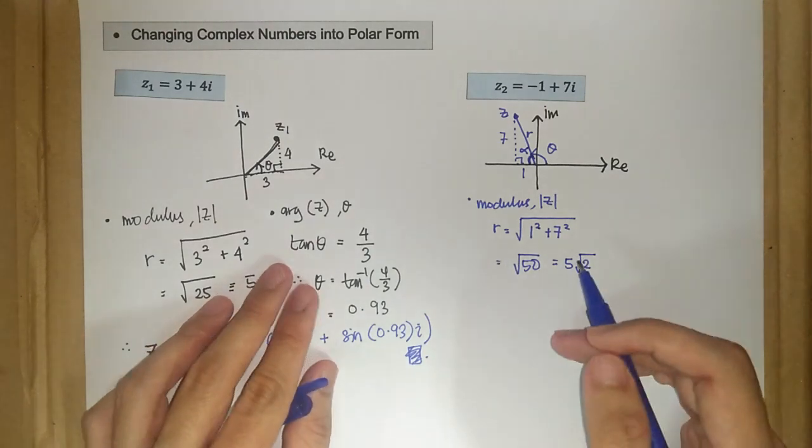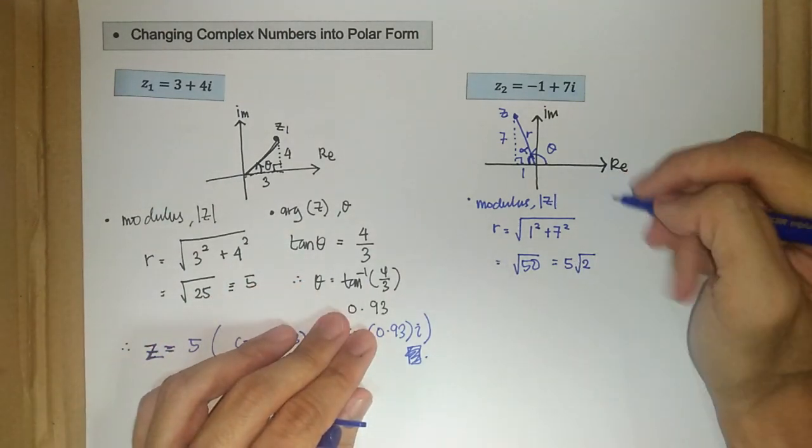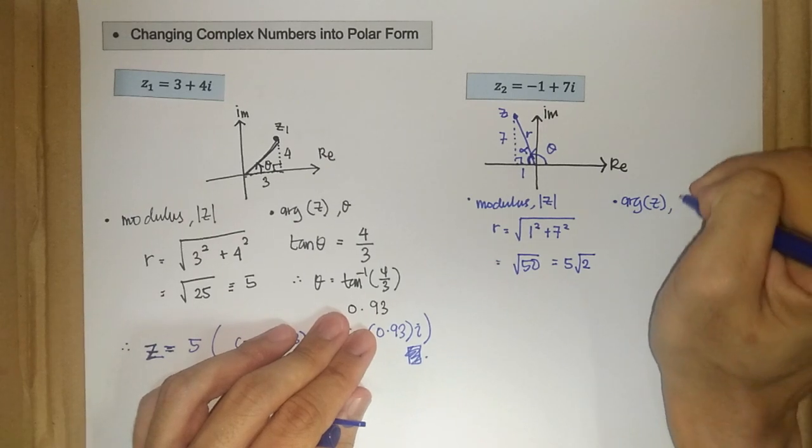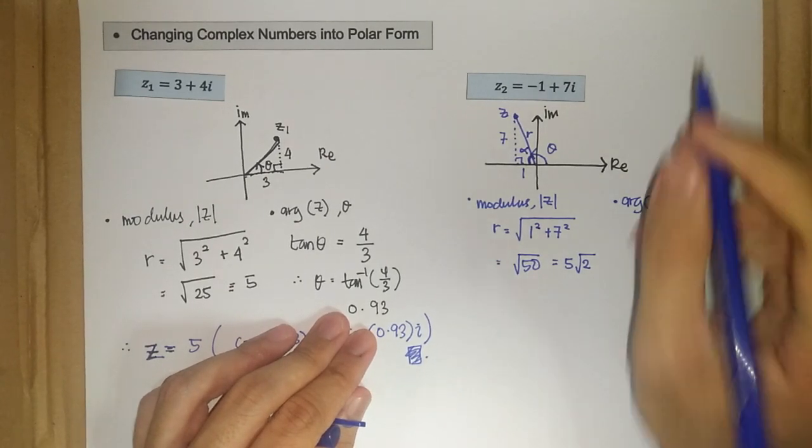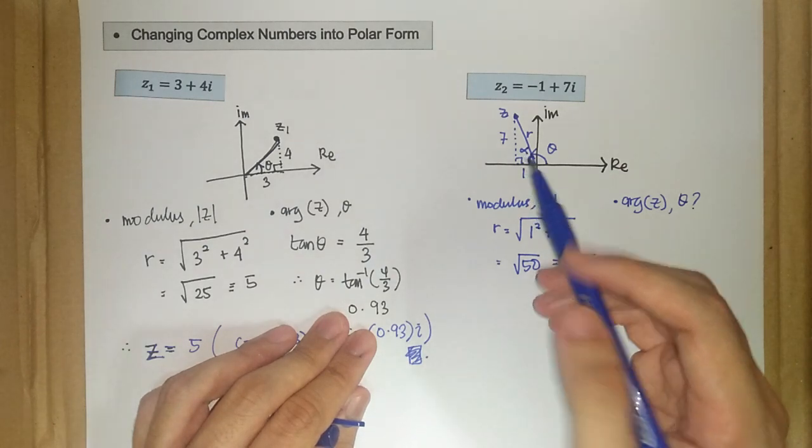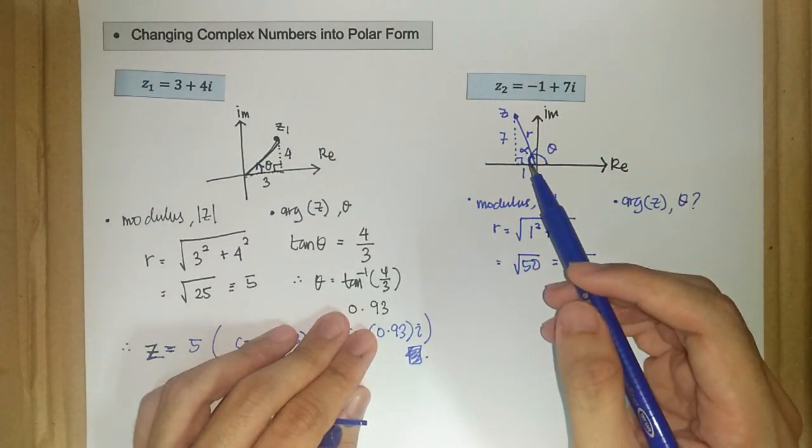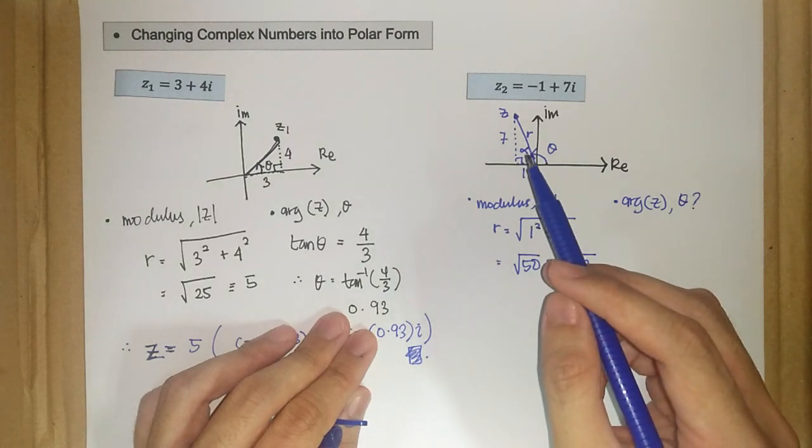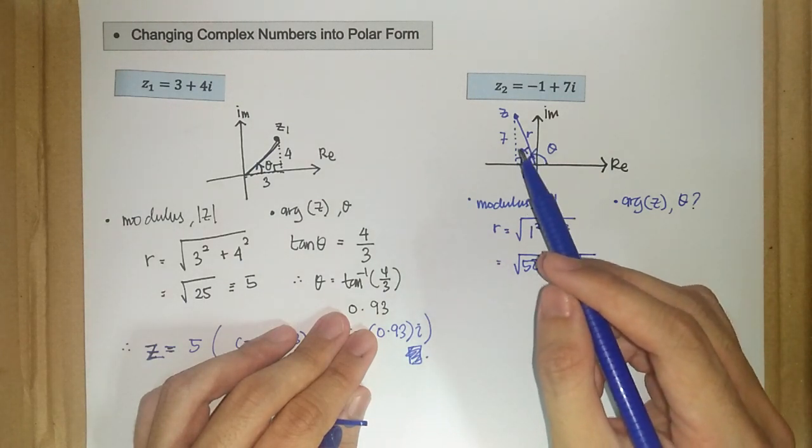So we have our modulus here. What about our argument of z, which is theta? So first, when we talk about this angle alpha, we don't simply have our argument. But when we know the value of alpha,